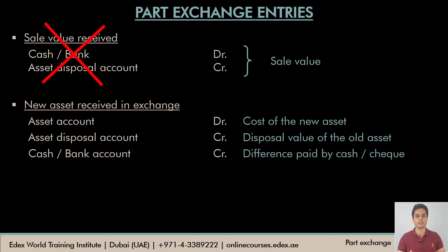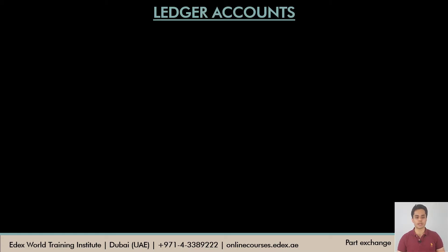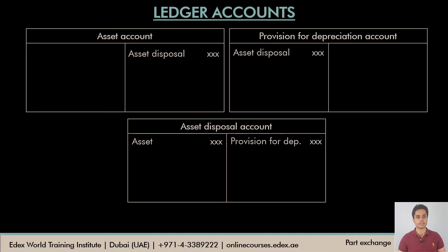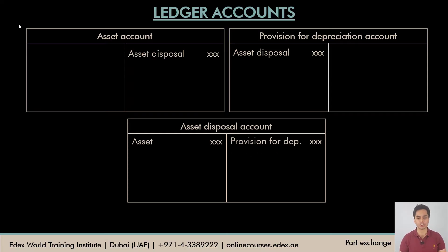Let's look at the effect of these transactions on the ledger accounts. In a normal disposal transaction, we credit the asset account and debit the asset disposal account; we debit the provision account and credit the asset disposal account; the sale value is received by cash or cheque; and profit or loss is transferred from the asset disposal account to the income statement. In a part exchange transaction, the cash and bank entry is not applicable because we're not receiving any cash or cheque — the part exchange journal entry is posted to the ledger accounts instead.